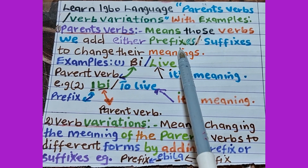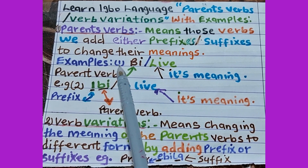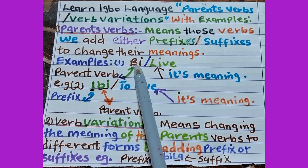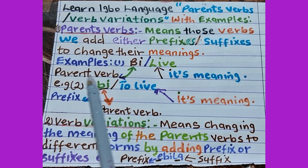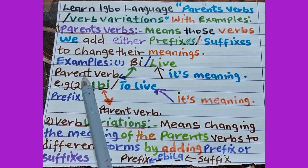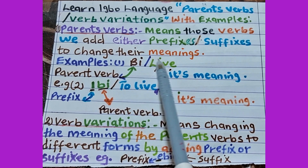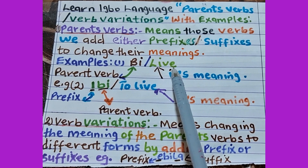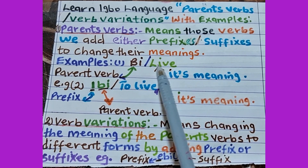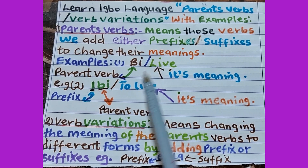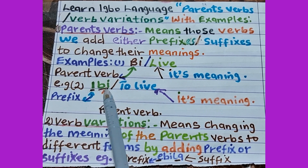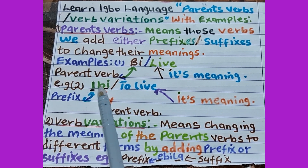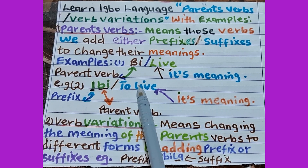The main verb we have, for example — example one — is 'be'. 'Be' is our parent verb. That is the main verb. 'Be' means 'live'. Now, example two: 'ebe'. It means 'to live'. That is its meaning.